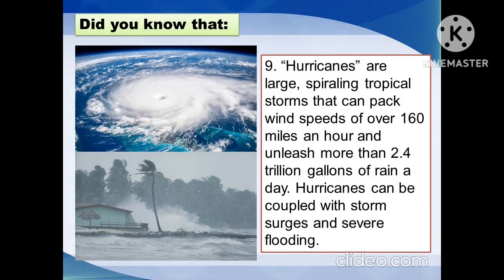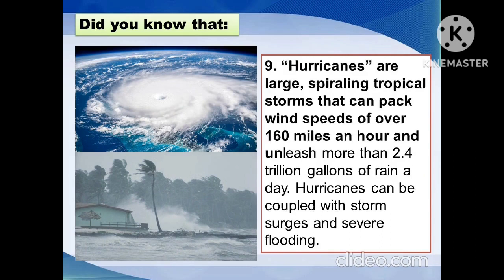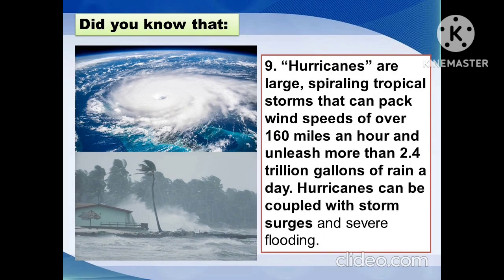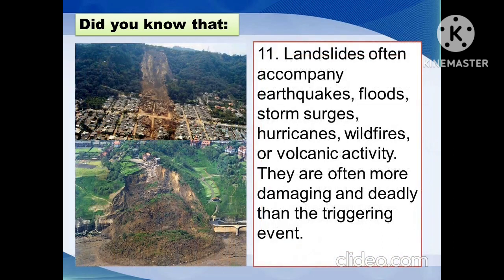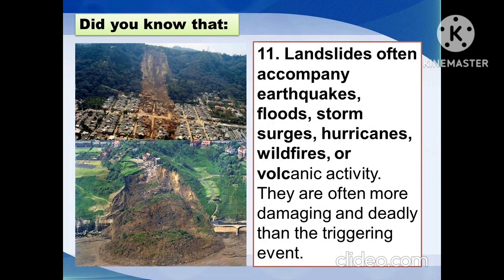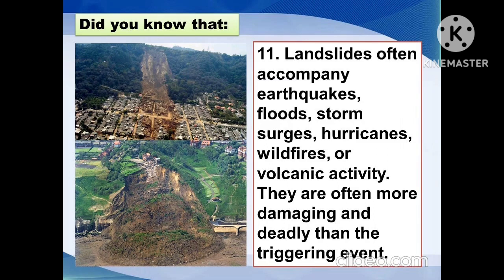Hurricanes are large, spiraling tropical storms that can pack wind speeds of over 160 miles an hour and unleash more than 2.4 trillion gallons of rain a day. Hurricanes can be coupled with storm surges and severe flooding. They often accompany earthquakes, floods, storm surges, wildfires, or volcanic activity, and are often more damaging and deadly than the triggering event.